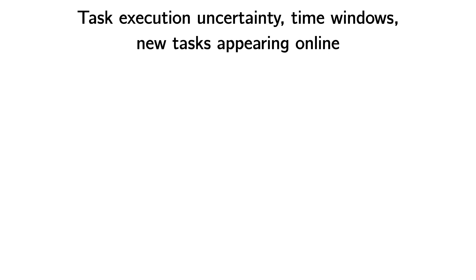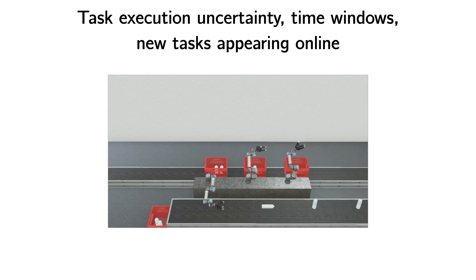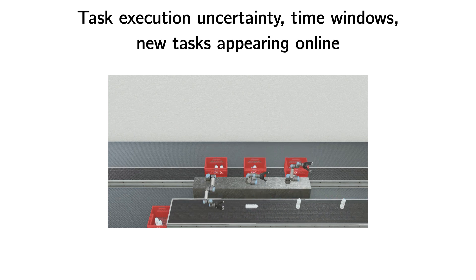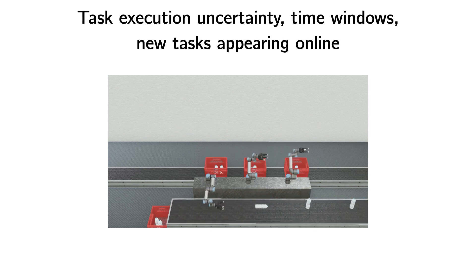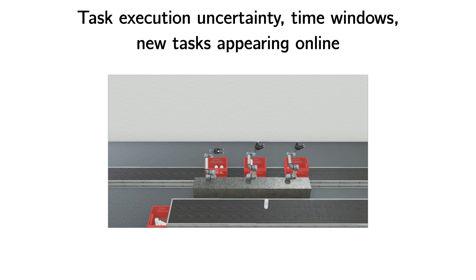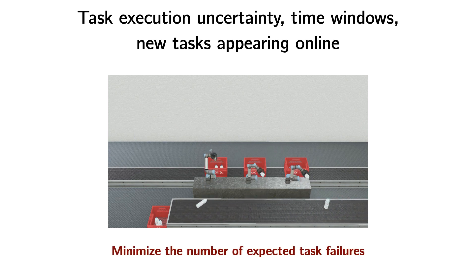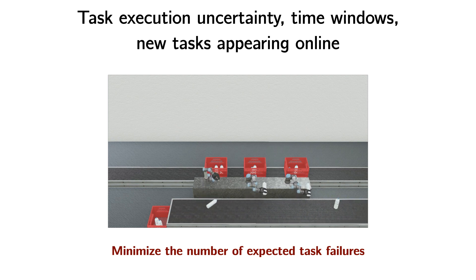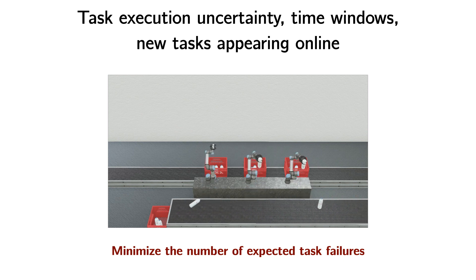Multi-robot task allocation needs to be computationally efficient and produce good solutions while accounting for the characteristics of real-world robotics, all of which manifest in this repeating segment. The imperfect grasping by the arm induces task execution uncertainty. The workspace limits along with the moving conveyor belt induce time window constraints for completing the task. New tasks appear online as objects placed on the belt. The robot team's objective is to minimize the expected number of task failures at the end of the operation horizon — in this case, to minimize the number of missed objects that must be sorted by hand afterwards.